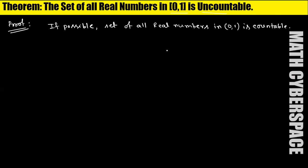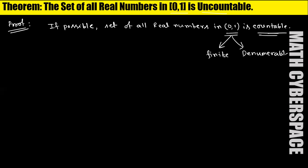Since the elements in open interval (0,1) are assumed countable, we have two possibilities: the set is either finite or denumerable. But we know there are infinitely many rational numbers in (0,1), so it cannot be finite. Therefore we have only one possibility — that it is denumerable.